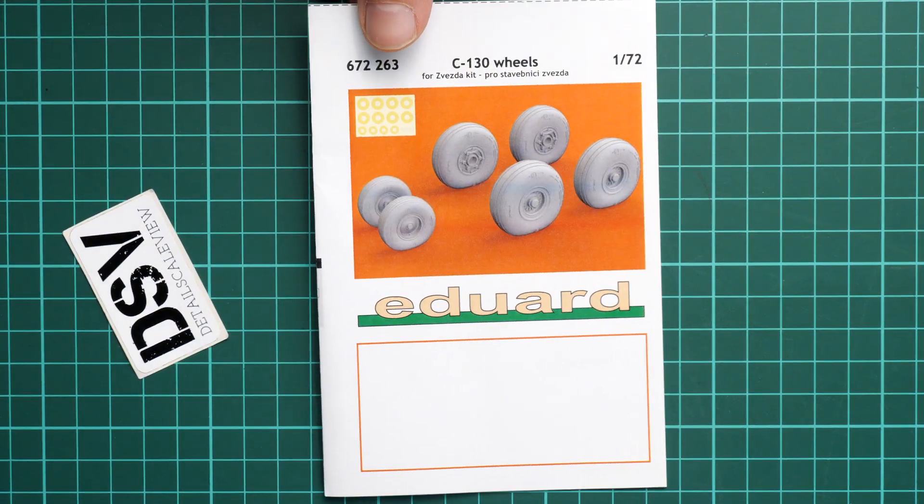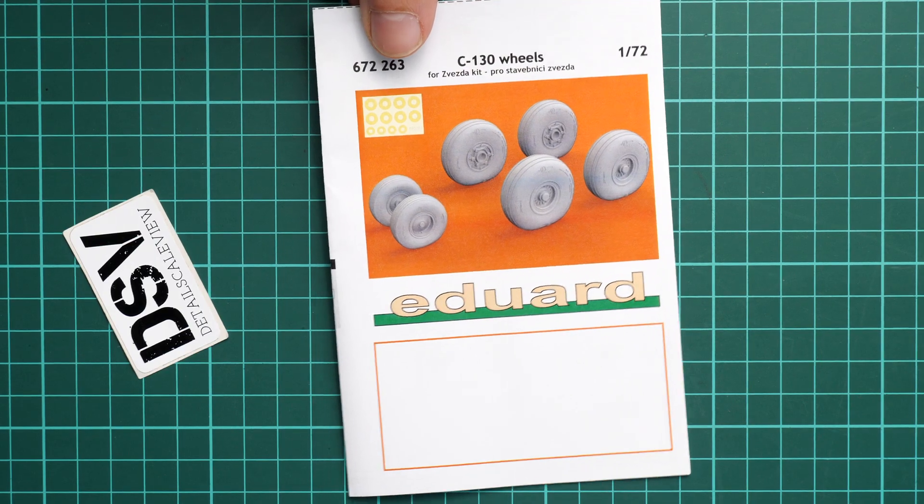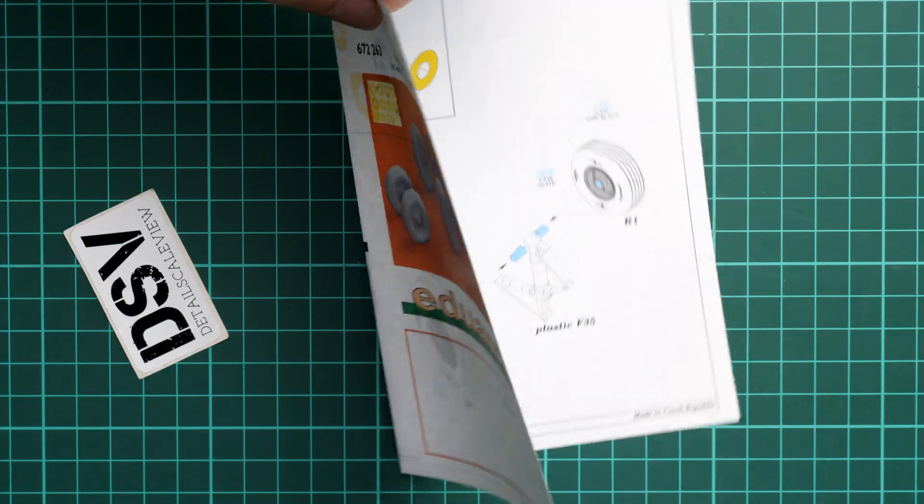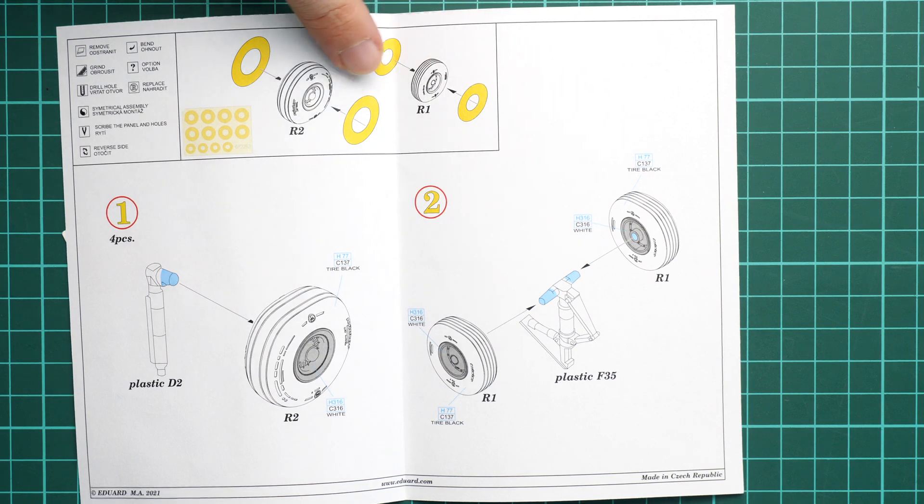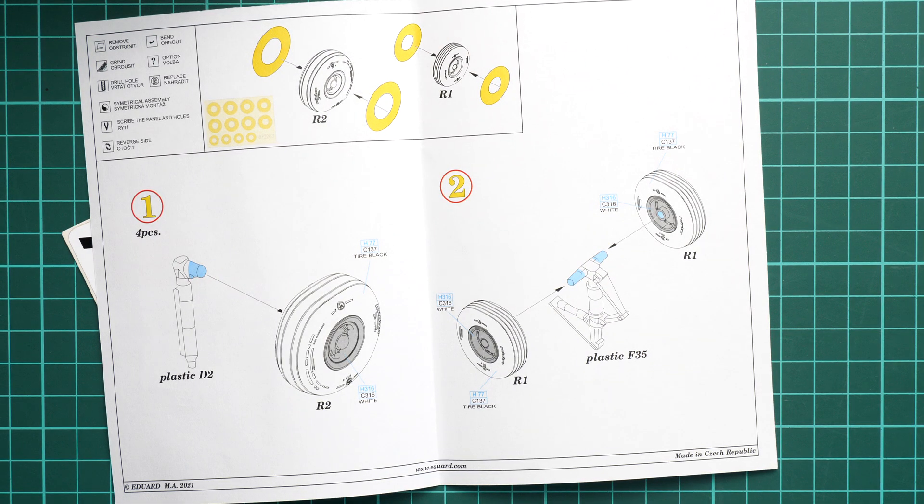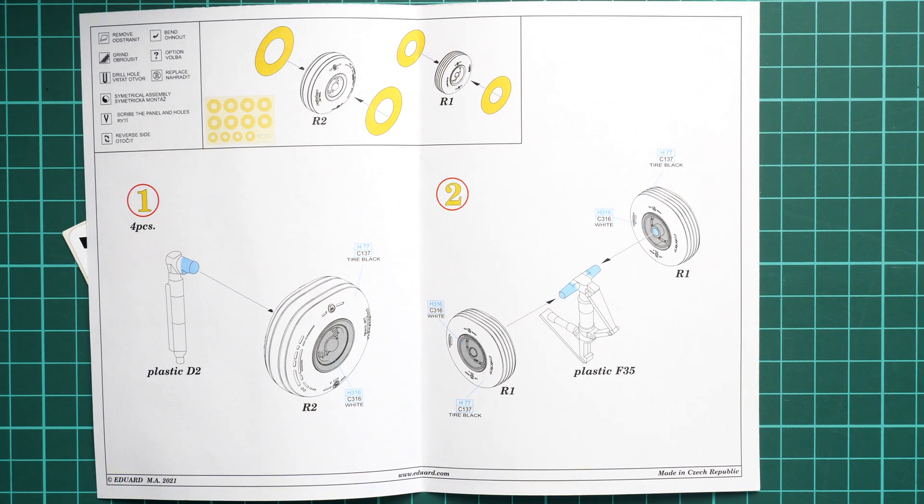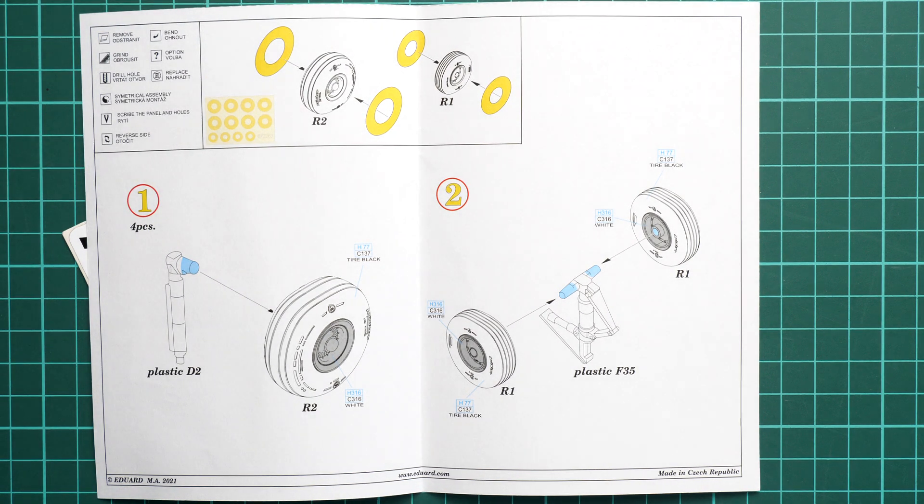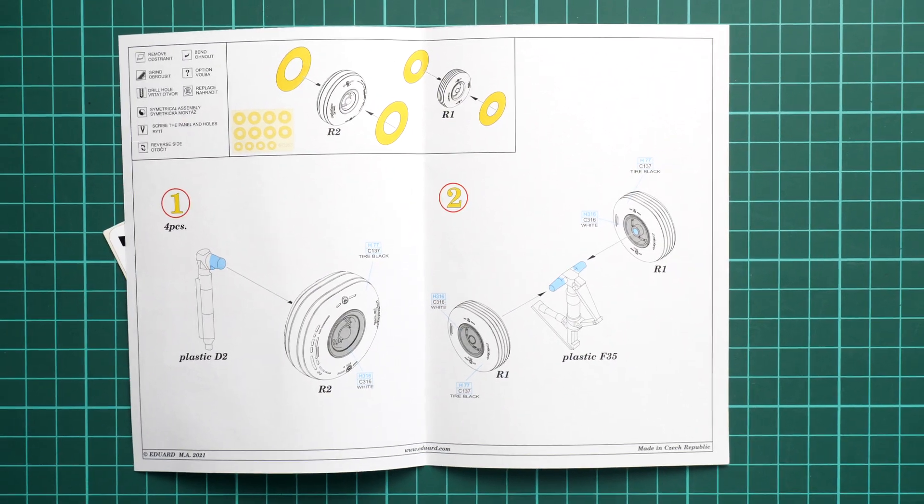And last but not least is this assembly manual which also serves as a box art. Here inside we have the assembly process and these parts are straightforward compatible with original parts, so they're ready to be used out of the box.